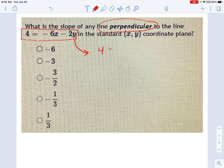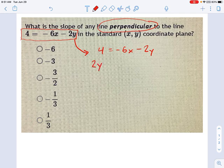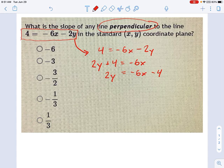If you have 4 equals negative 6x minus 2y, we don't normally think about lines this way. We normally have y on the left and everything else on the right. So I'm going to add 2y to each side, and then I'm going to subtract 4 from each side. And then I'm going to divide each side by 2 so I get a nice y equals equation.